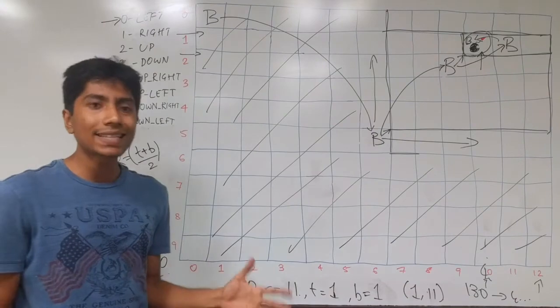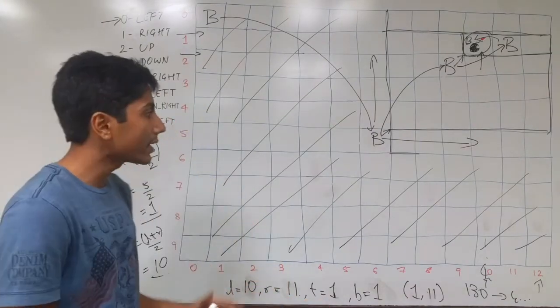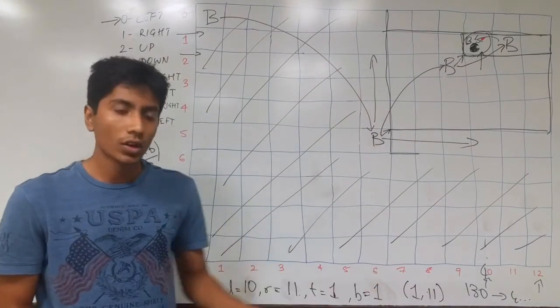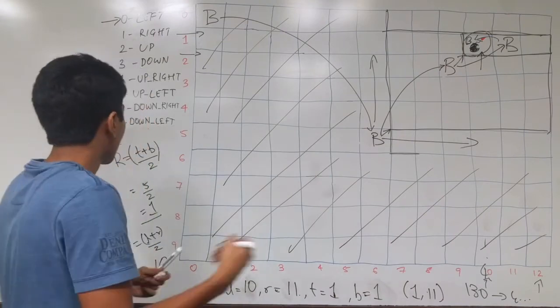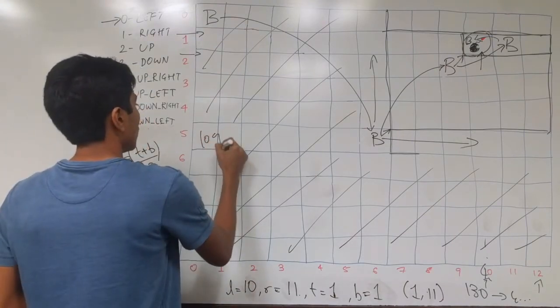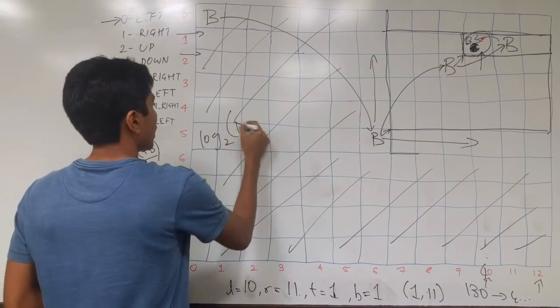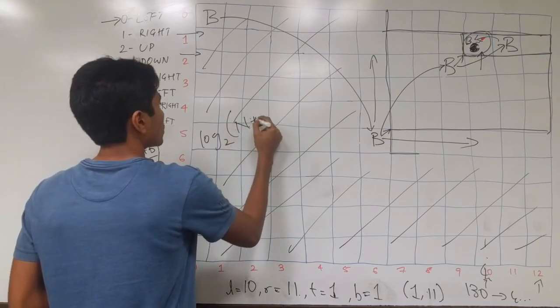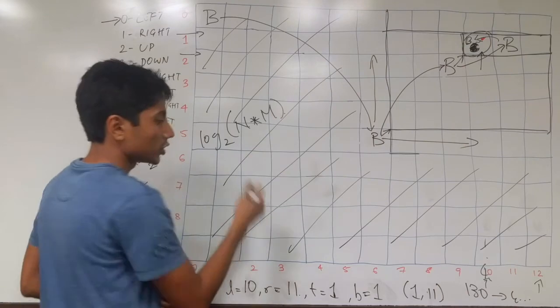What we are seeing is that even in the worst case you're getting rid of at least half the area. That's a property of binary search, and so this is going to be taking you log to the base 2 of N times N jumps, where N and N are the dimensions of this grid.